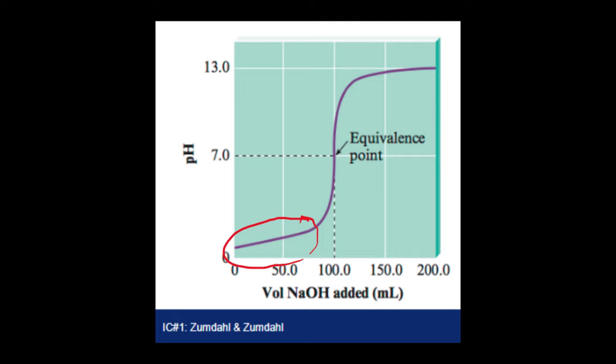In this part of the curve up here, I have an excess of base, and that's why the pH is staying really high, and the equivalence point is my transition. That's when I go from an excess of acid over here to an excess of base over here, and that's why I have a very sudden change in pH.